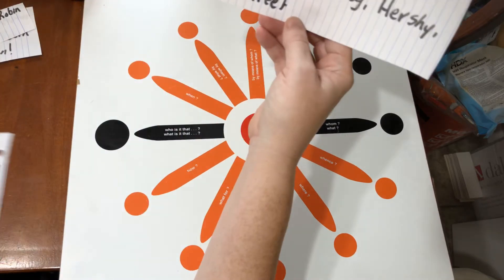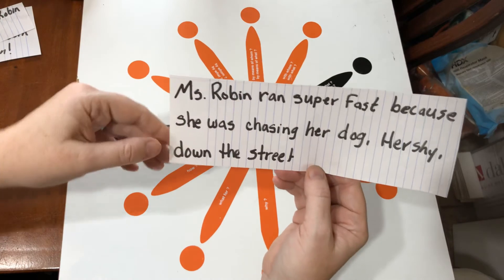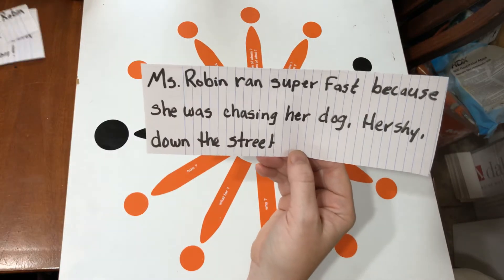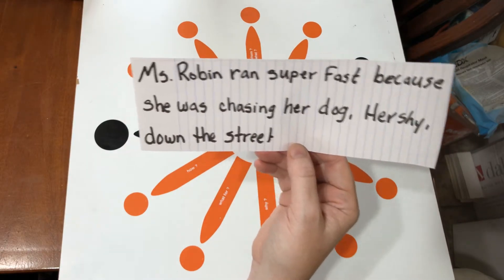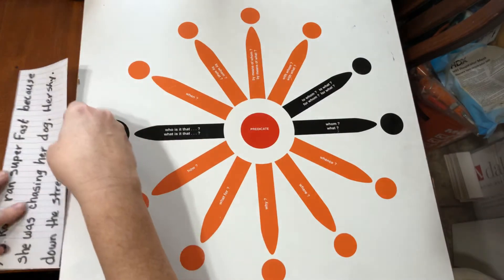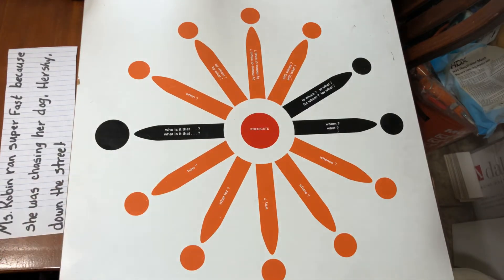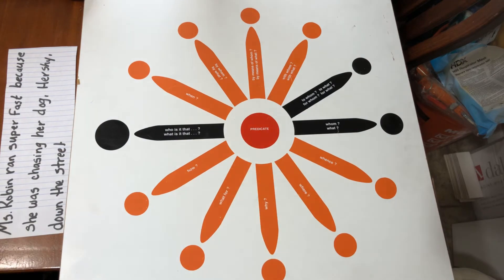Miss Robin ran super fast because she was chasing her dog Hershey down the street — true story, I've had to do that before. So we're going to put that right here, there is our sentence, and we're going to start with our verb.